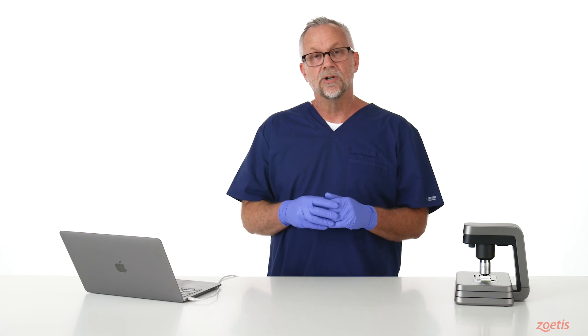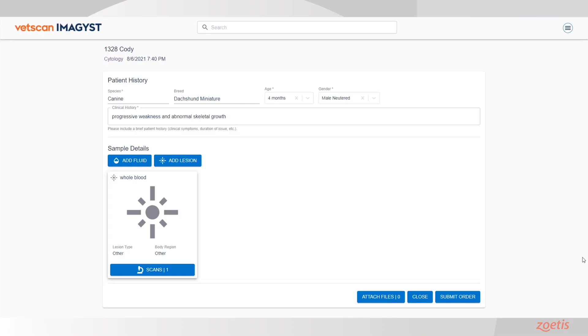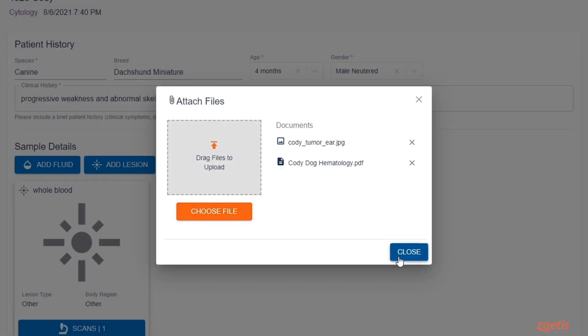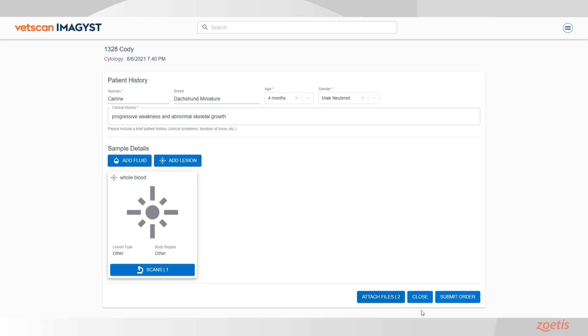Prior to submitting the order, you can attach additional files that the pathologist might find useful. Click Attach Files and upload any JPEG or PDF. When those files have been uploaded, click Close and then click Submit Order.